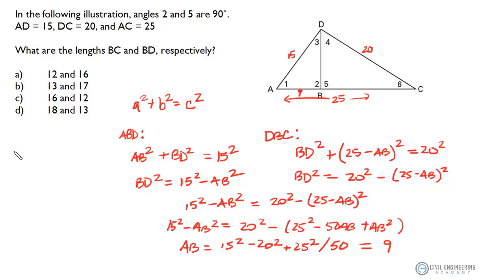So we could say that BC equals 25 minus 9, or 16. Okay, so now we can solve for BD because we can say BD squared equals 15 squared minus we solved for AB previously, 9 squared. BD equals the square root of 15 squared minus 9 squared. Punch that in your calculator and you get 12.